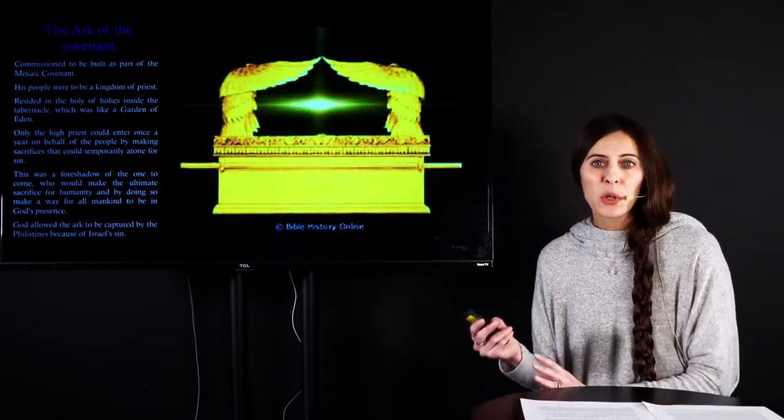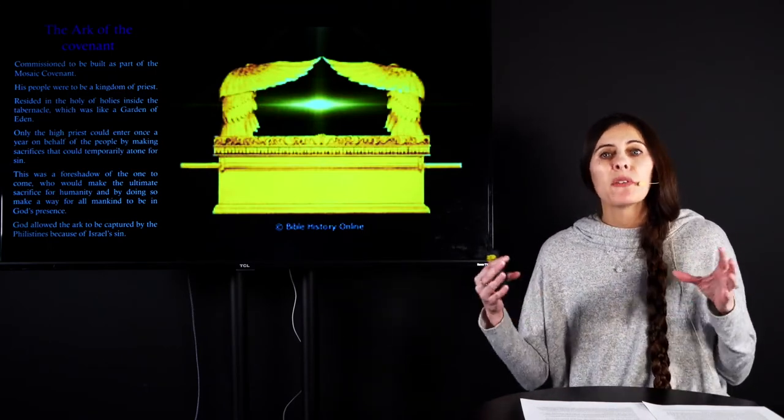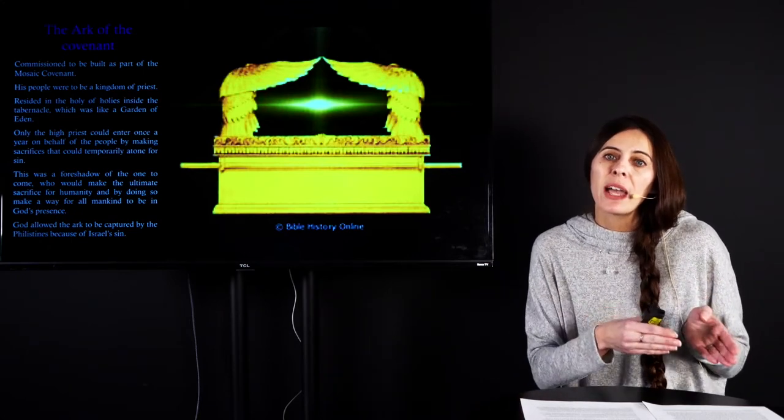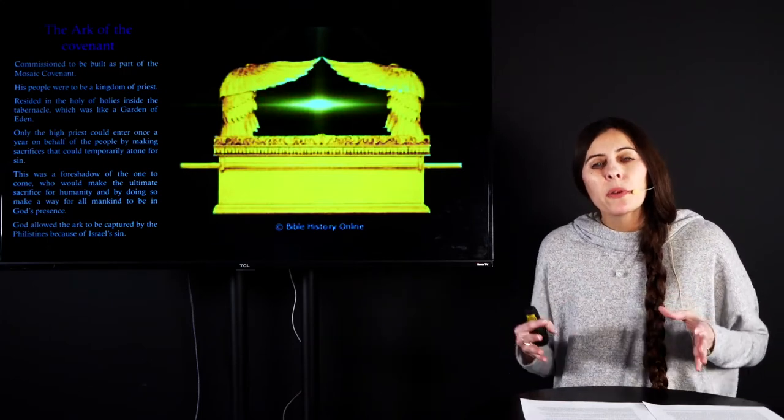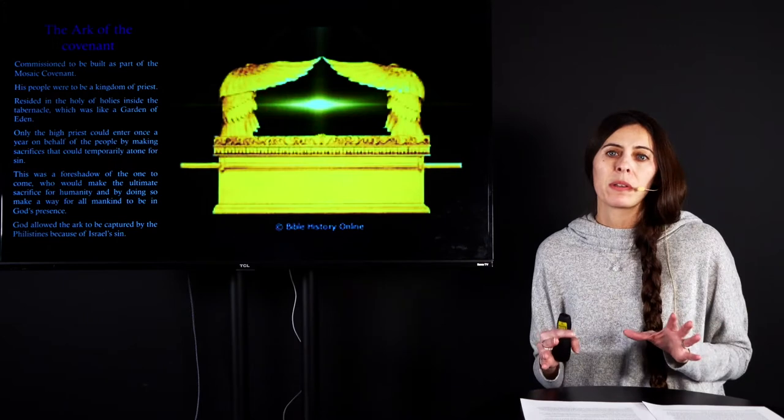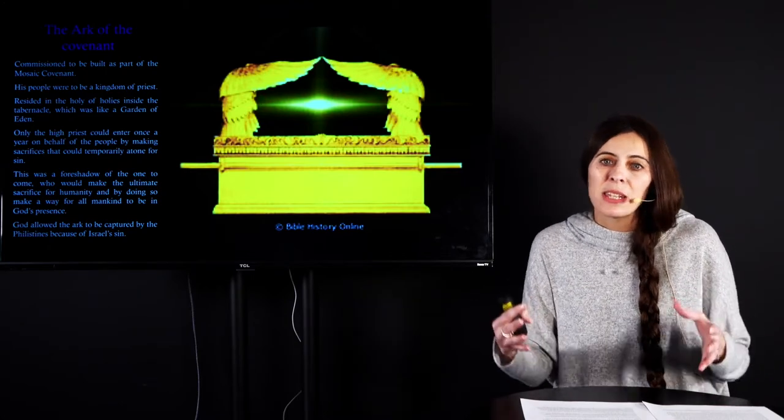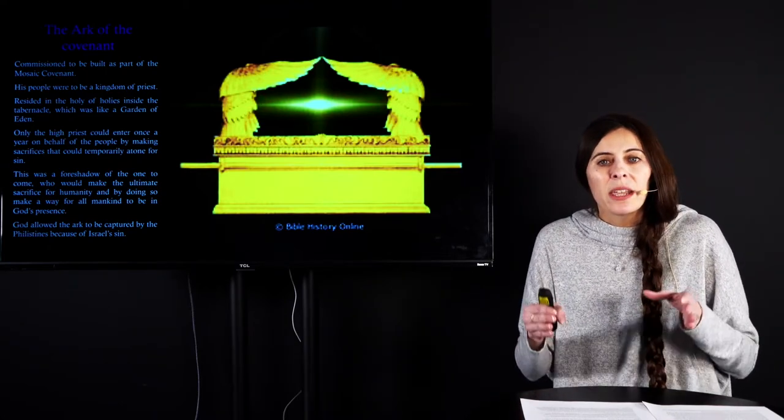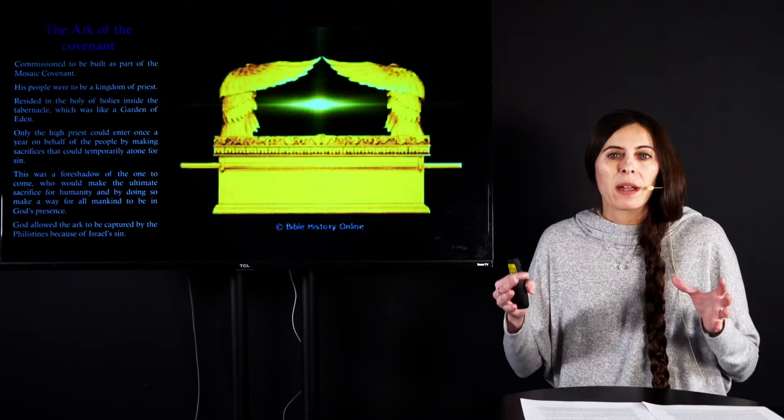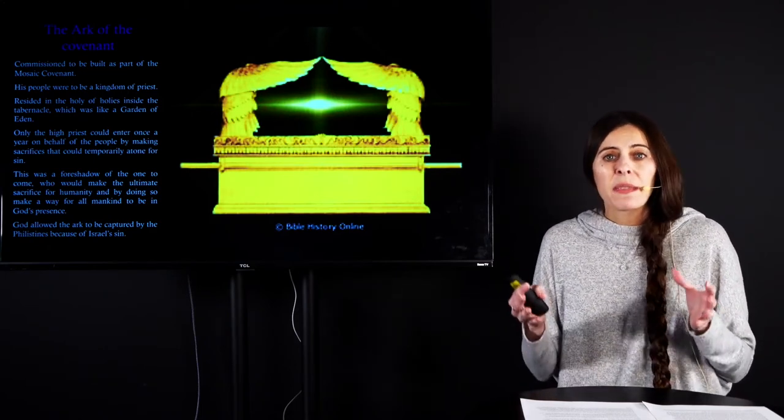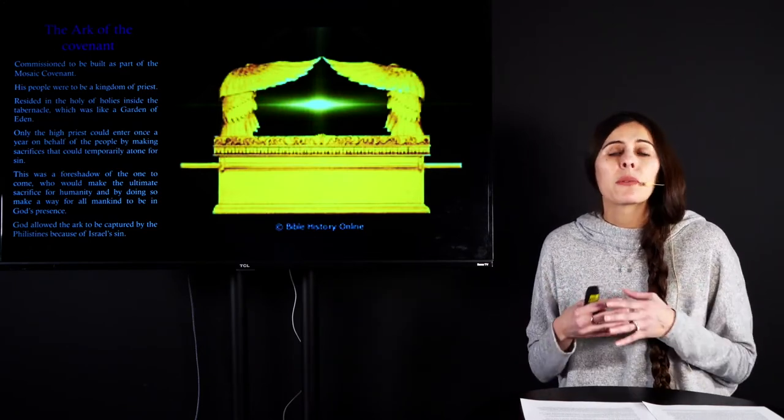And nothing in the Old Testament is more connected with the power and the presence of Yahweh than the Ark of the Covenant. The Ark of the Covenant, just a little background here, it came, it was commissioned by God as part of the Mosaic Covenant. Now, the Mosaic Covenant, that stemmed from the Abrahamic Covenant, the promise to Abraham that through his descendants, all of the world was going to be blessed.